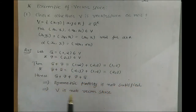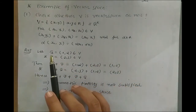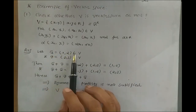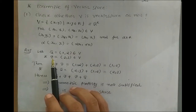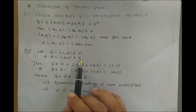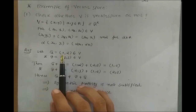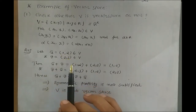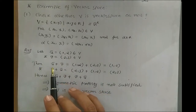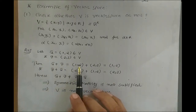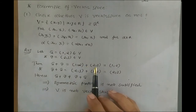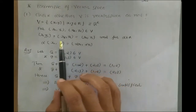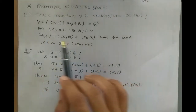First we check the commutative property. Let U̅ = (1, 2) belonging to V and V̅ = (2, 3) belonging to V. Then U̅ + V̅ = (1, 2) + (2, 3) = (1, 2), because from the binary operation definition, the result is (x₁, y₁) — so x₁ = 1 and y₁ = 2.